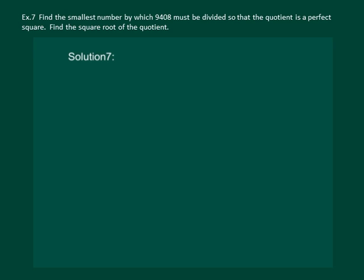Find the smallest number by which 9408 must be divided so that the quotient is a perfect square. Find the square root of the quotient. We have 9408.